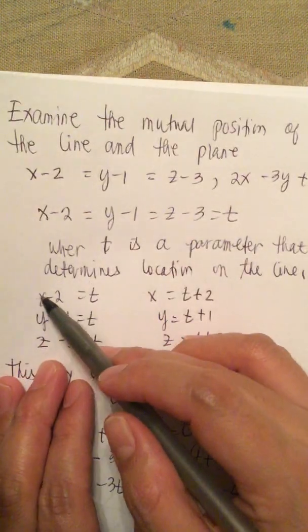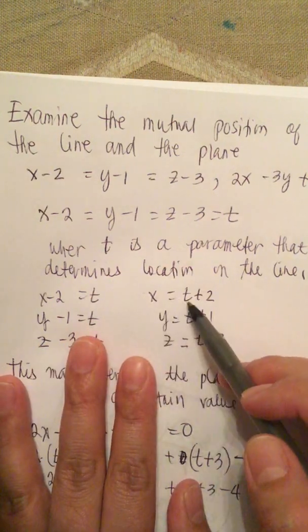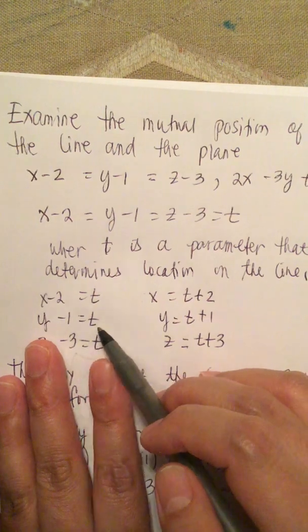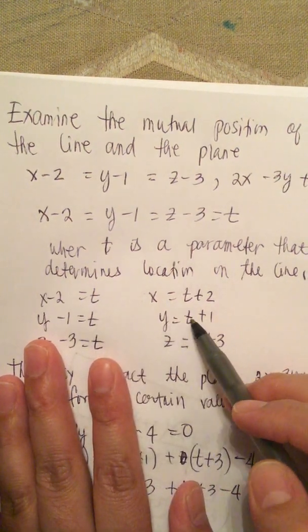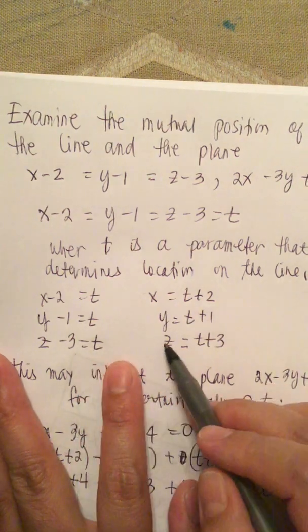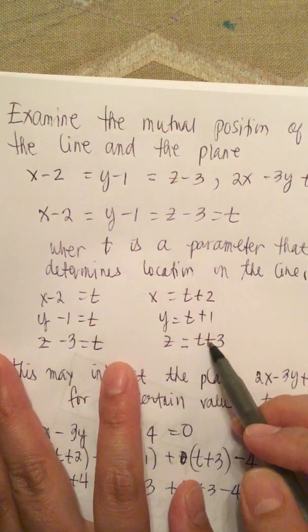So we have x minus 2 equals t, or x is equal to t plus 2. Y minus 1 equals t, or y equals t plus 1. Z minus 3 equals t, or z is equal to t plus 3.